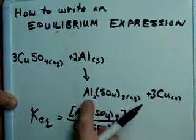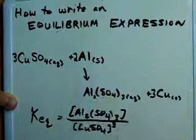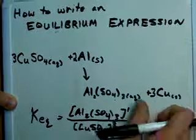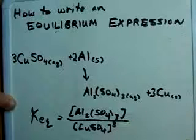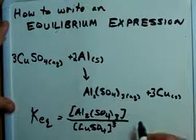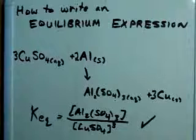There's only one Al2(SO4)3 here, so we could say that it has an exponent 1, but we don't write that because it's understood. And this here, we're already done our equilibrium expression.